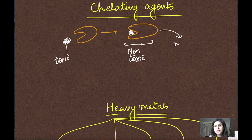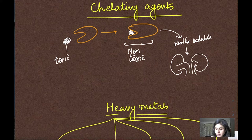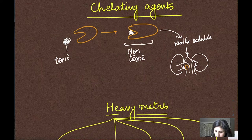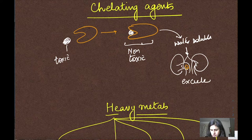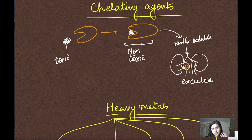It can be easily excreted by the kidneys. This chelating agent along with its toxic metals can be easily excreted. This is the role of a chelating agent.